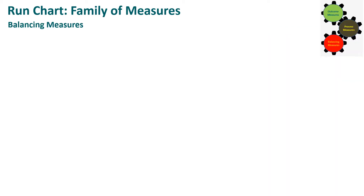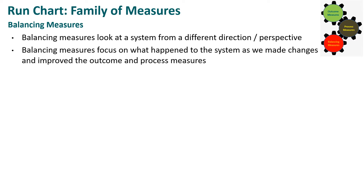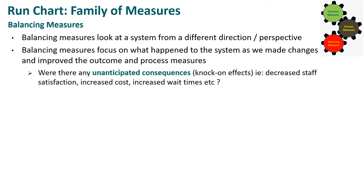The last family of measures is the balancing measure. Balancing measures look at the system or process from a different direction or perspective. They focus on what happened to the system or process as we made changes and improved the outcome and process measures. We need to look to see if there are any unanticipated consequences, such as knock-on effects — for example, a decrease in staff satisfaction, increased costs, or increased waiting times for patients.